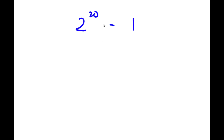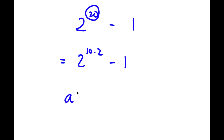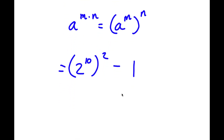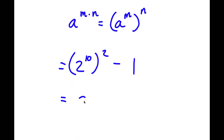In this problem, I have 2 to the power of 20 minus 1. I'm going to start by rewriting the exponent 20 as 10 times 2. So now I have 2 to the power of 10 times 2 minus 1. If I have something in the form a to the power of m times n, this equals a to the power of m to the power of n. So 2 to the power of 10 times 2 becomes 2 to the power of 10 to the power of 2, minus 1. And 1 here is the same thing as 1 squared.